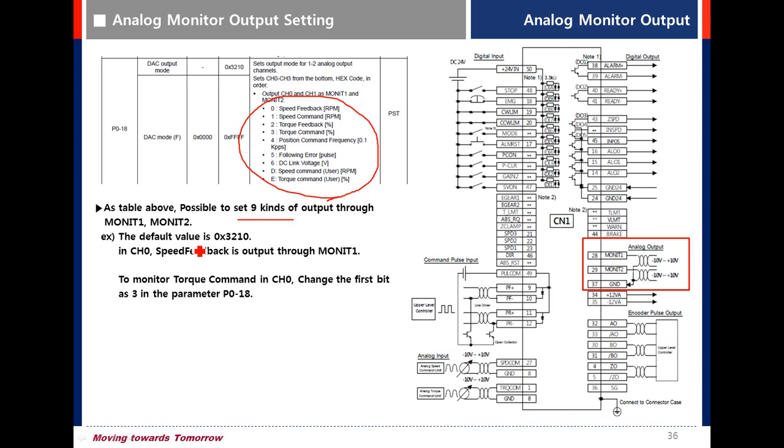The default value is 3, 2, 1, 0. Channel 1 is 0, and zero is speed feedback, which is output through Monitor 1.